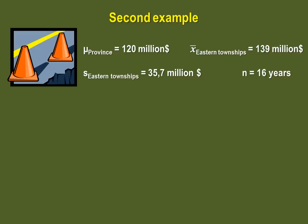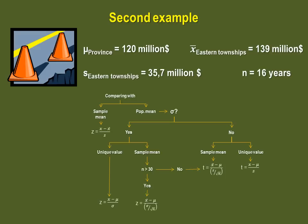Again, the first thing to do is to check which statistic we are going to use. So are you comparing to a sample mean or a population mean? You are comparing to a population mean. Do you have the standard deviation for the population? No. So are you comparing a unique value or a sample mean to your population mean? You are comparing a sample mean and as such this is the equation you must use to calculate your test statistic.